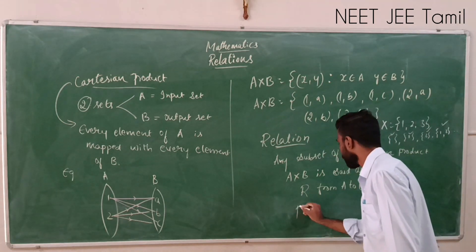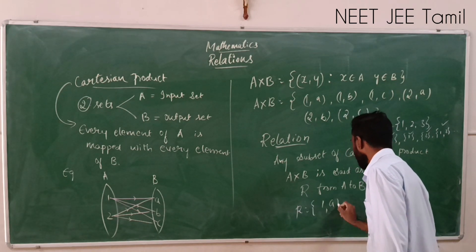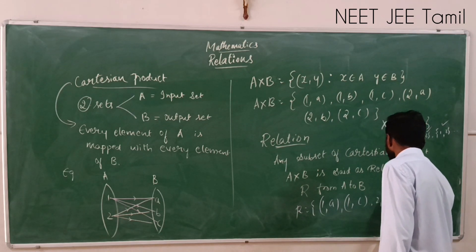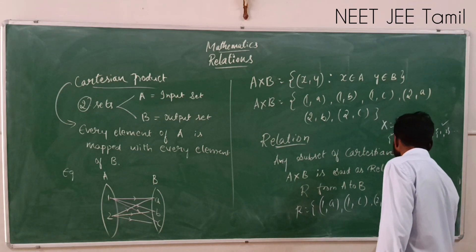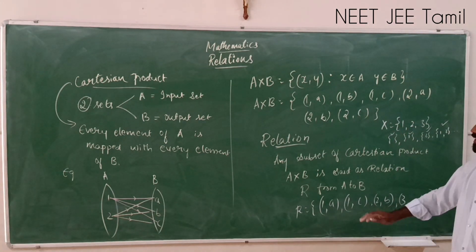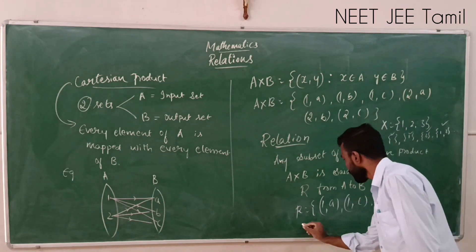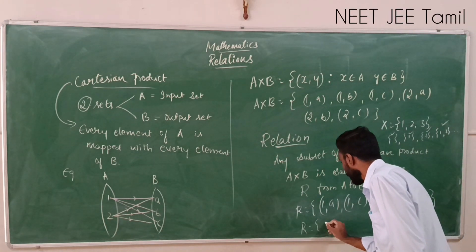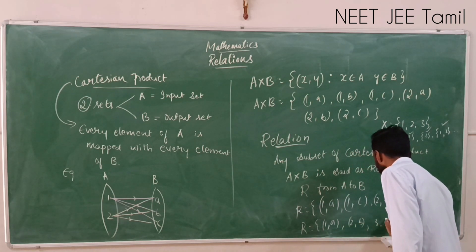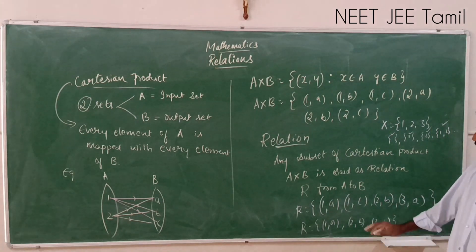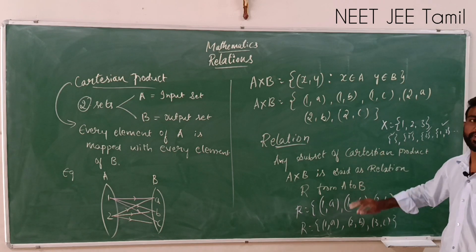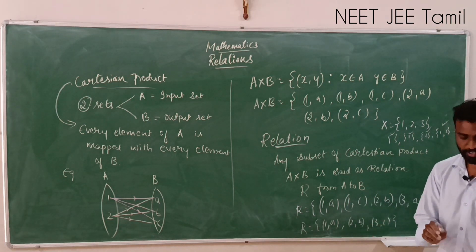For example, relation R could be {(1,A), (1,C), (2,B), (3,A)} — this becomes one relation R. We can also write another relation such as {(1,A), (2,B), (3,C)}. So a relation is nothing but any subset of a Cartesian product.